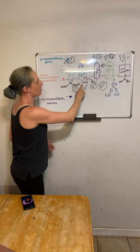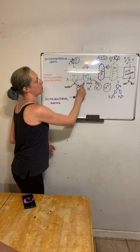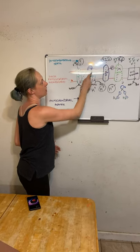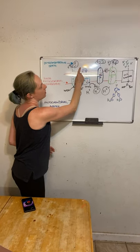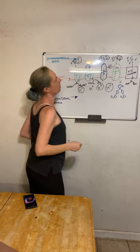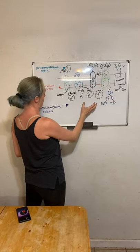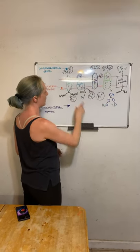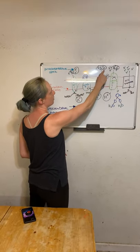FADH2 donates two electrons to complex 2. Complex 2 is not a proton pump — it transfers these electrons directly to coenzyme Q, at which point coenzyme Q donates all these electrons to complex 3. Complex 3 is a proton pump and is able to shovel protons from the mitochondrial matrix into the intermembrane space, just like complex 1, also four hydrogens for each one.